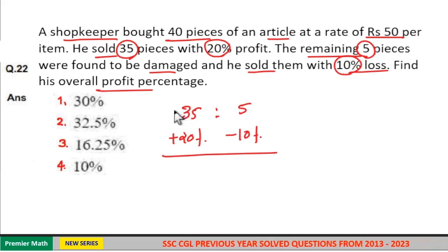Now here take the ratio of numbers. 5 goes 7 times in 35, 5 goes 1 time in 5.